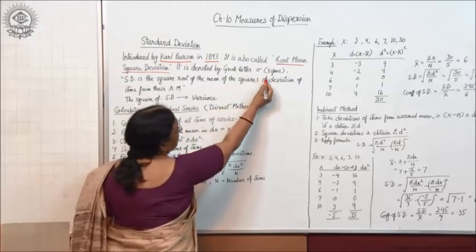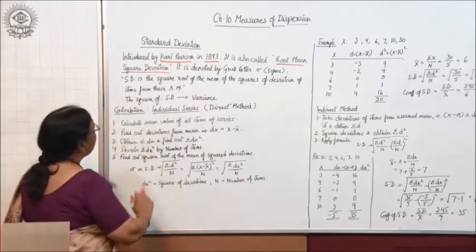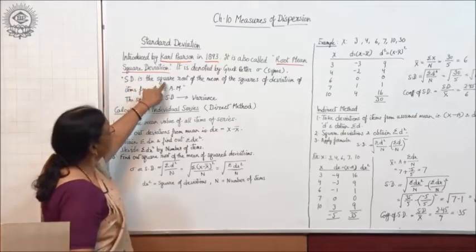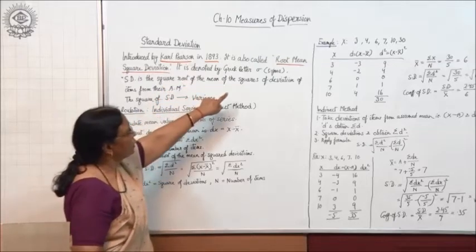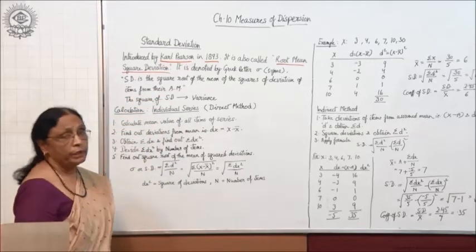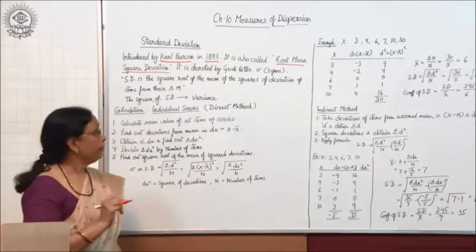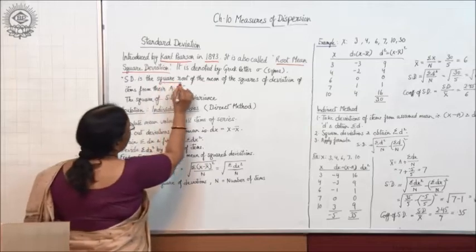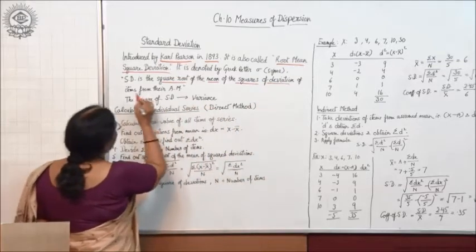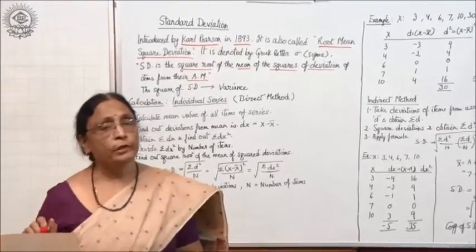Standard deviation is denoted by the Greek letter sigma. The meaning of standard deviation: standard deviation is the square root of the mean of the squares of deviations. The deviations are always taken from the arithmetic mean. So, standard deviation is the square root of the mean of the squares of deviations of items from their arithmetic mean. This is the definition of standard deviation.